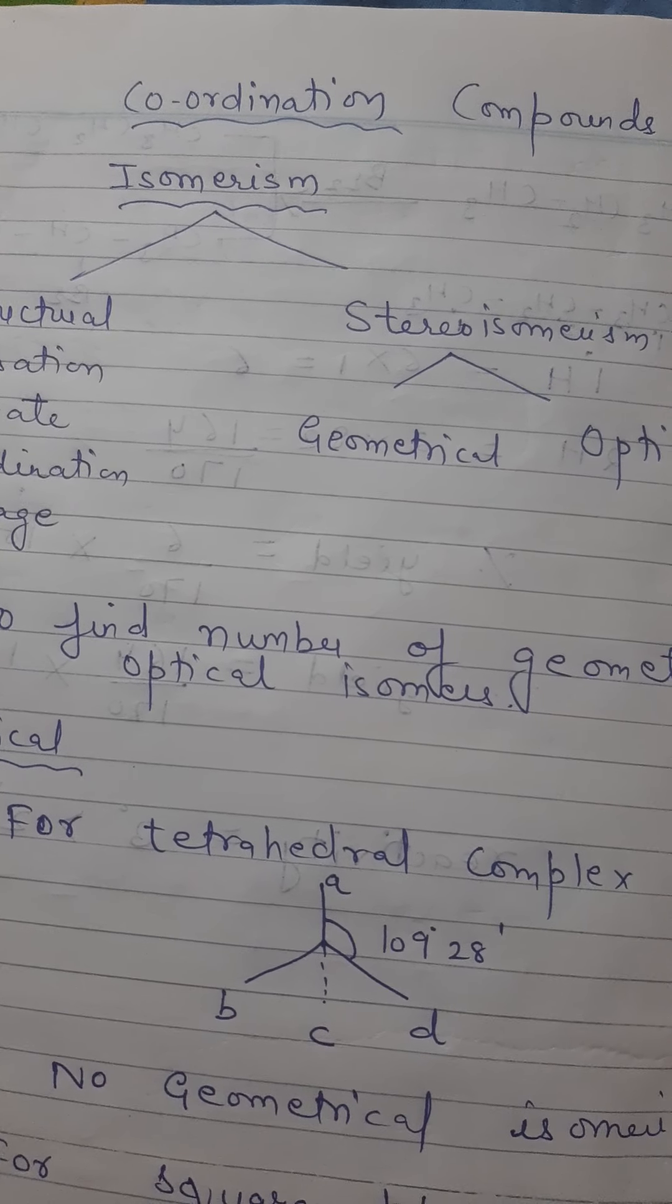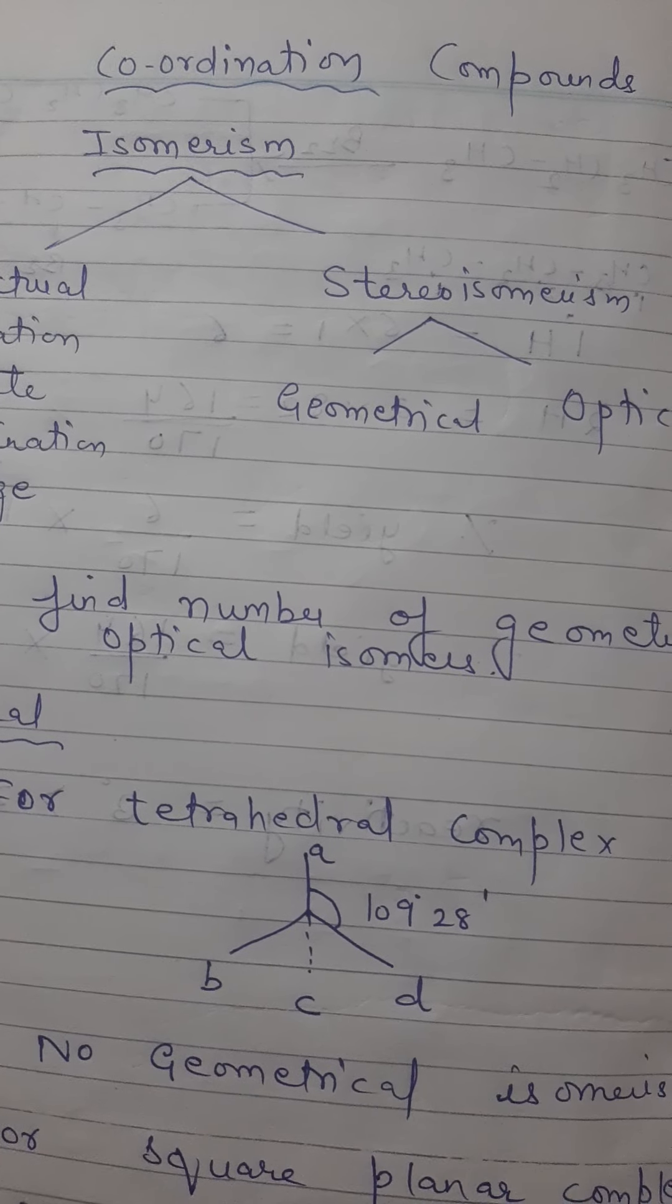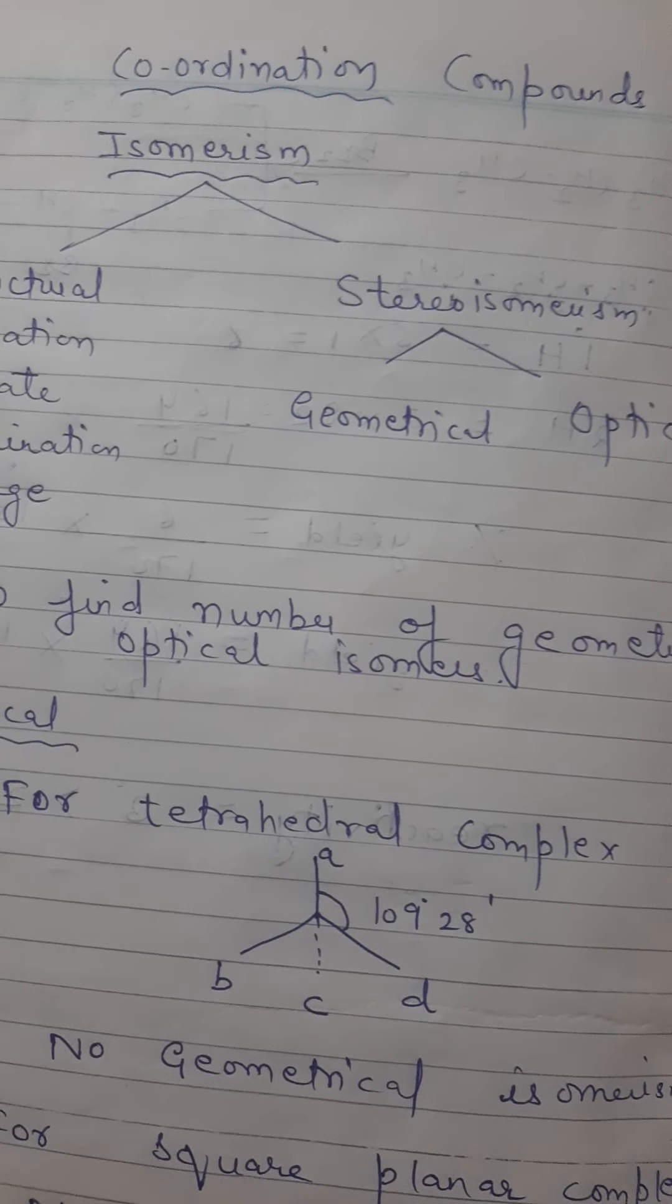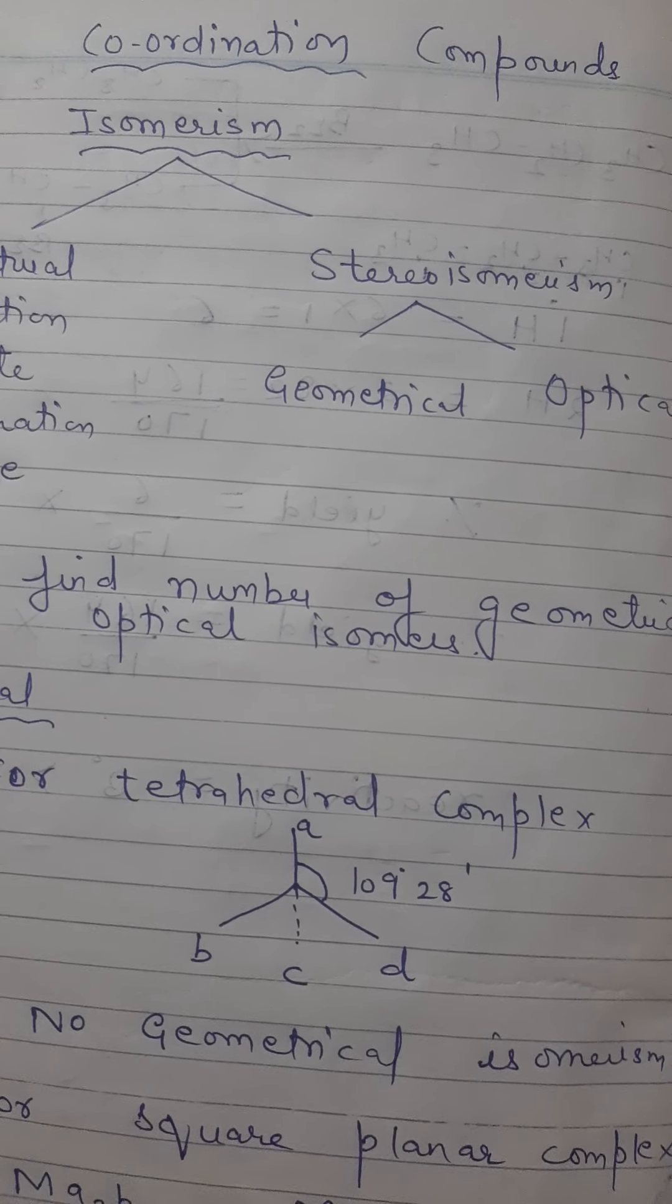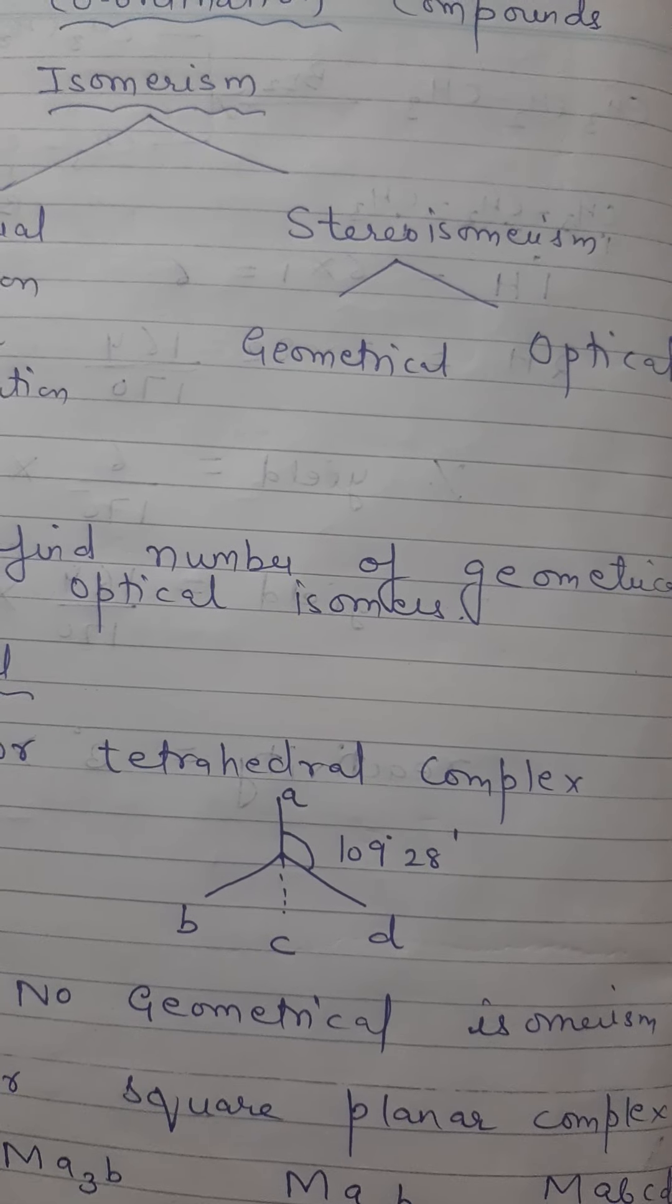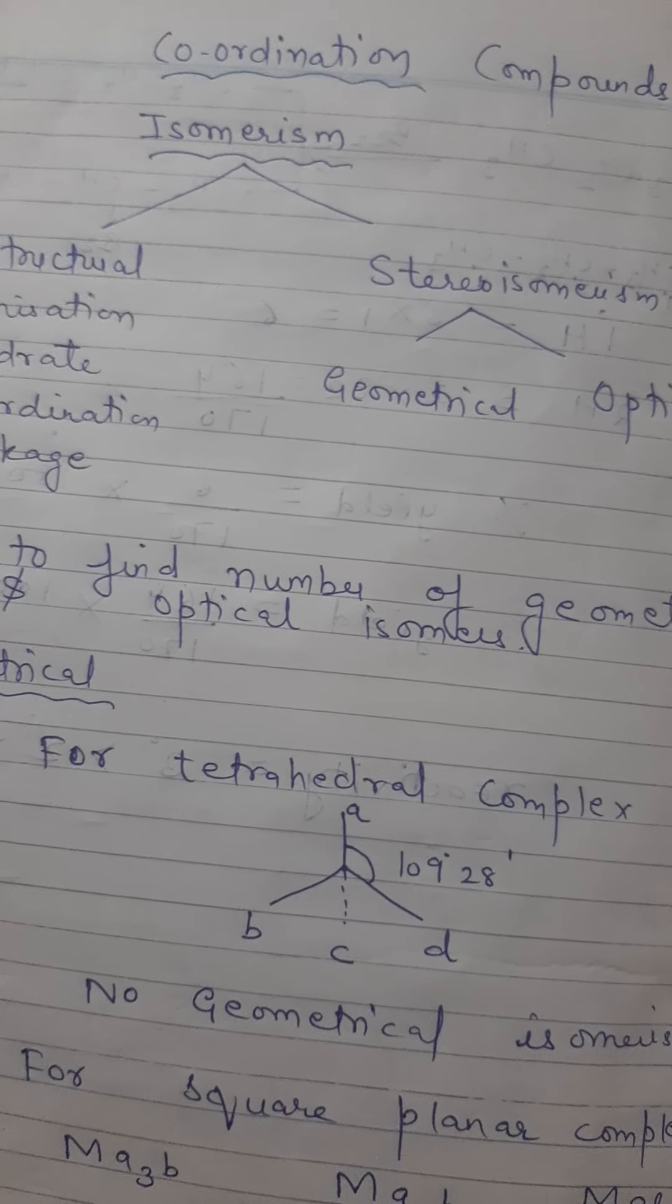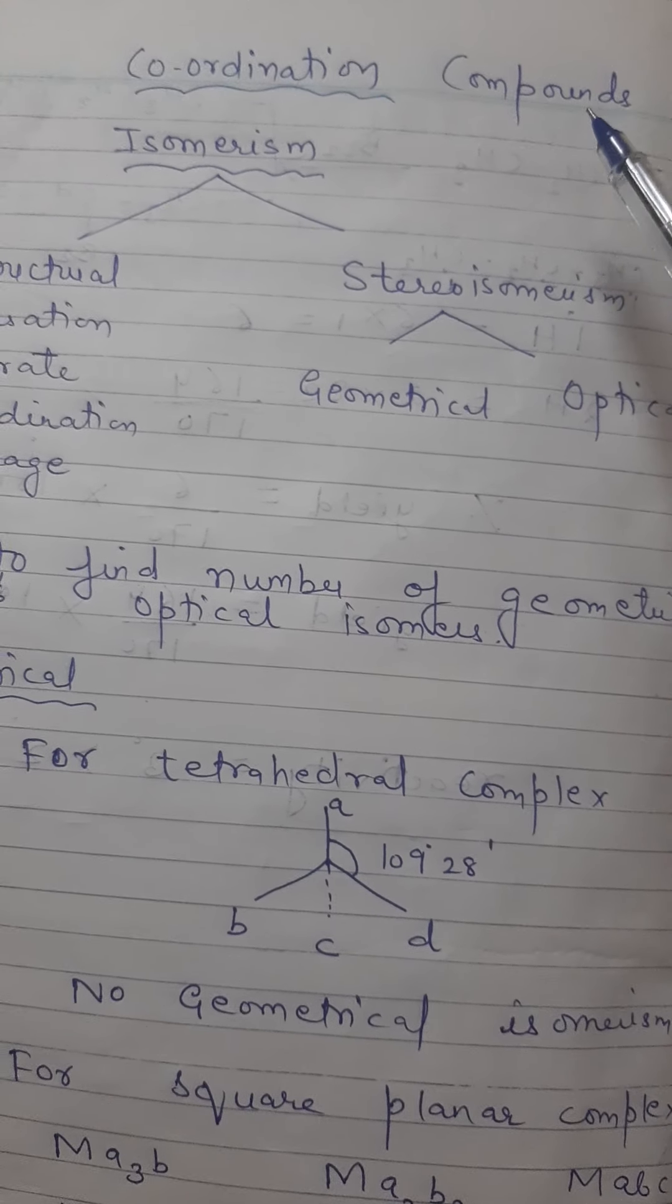Hello students, welcome to Chemistry Can channel. Our today's topic is coordination compounds from Grade 12, and the subtopic is isomerism. First of all, we'll discuss what is isomerism. Isomerism is the phenomena in which molecules have the same molecular formula but different structural arrangement of atoms. In coordination compounds, isomerism is categorized in two types: structural and stereoisomerism.